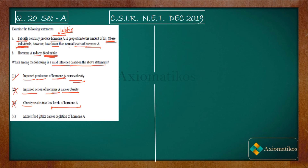The fourth option says: excess food intake causes depletion of hormone A. This is incorrect because if you take a lot of food, fat cells will produce more hormone A, and hormone A will reduce food intake. So excess food intake results in more hormone A, not depletion. That is why the fourth option is also incorrect.